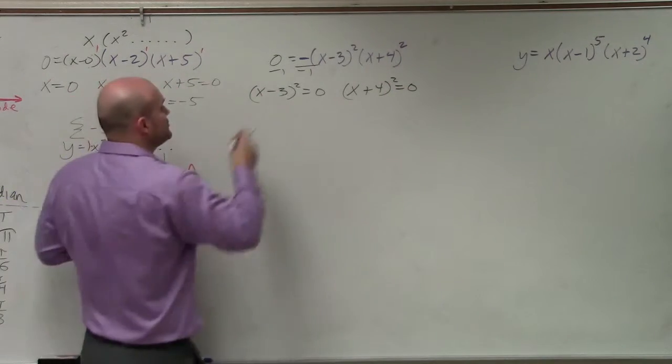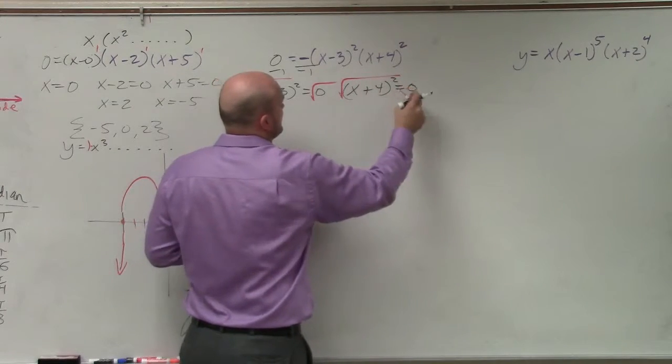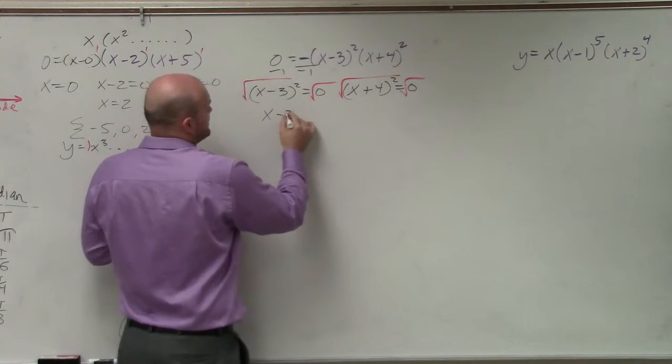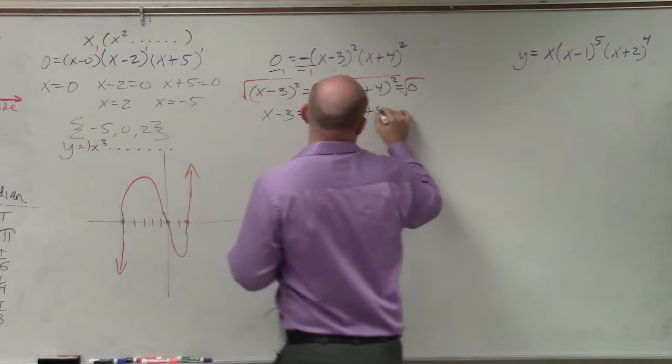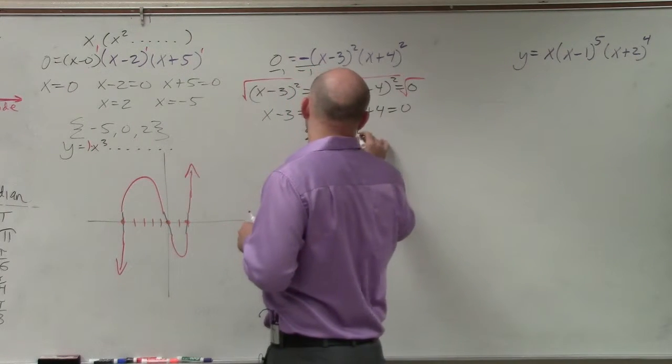Then I can set all my factors equal to 0. Then I need to solve. Well, to undo squaring, I need to take the square root of both sides. So therefore, I have x minus 3 equals 0, and x plus 4 equals 0. Therefore, my solution set would be positive 3 and negative 4.